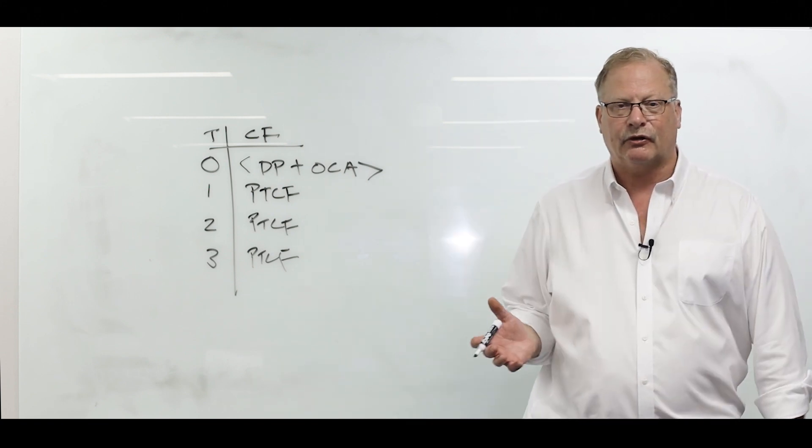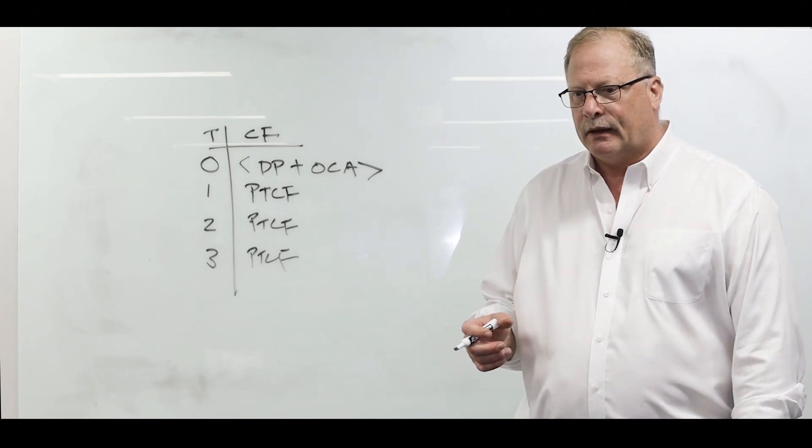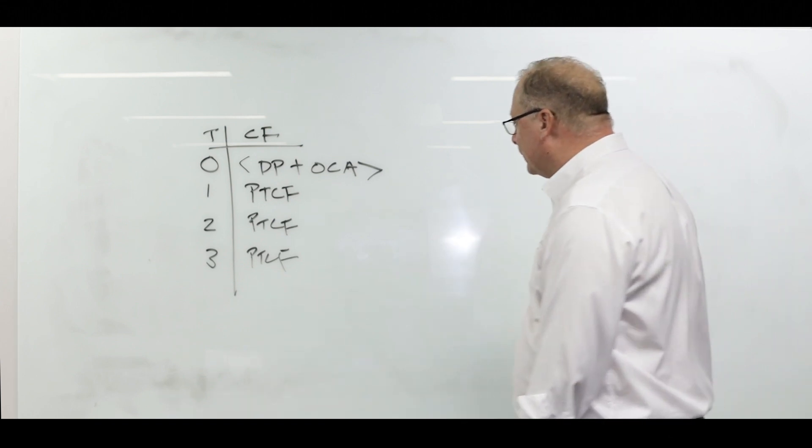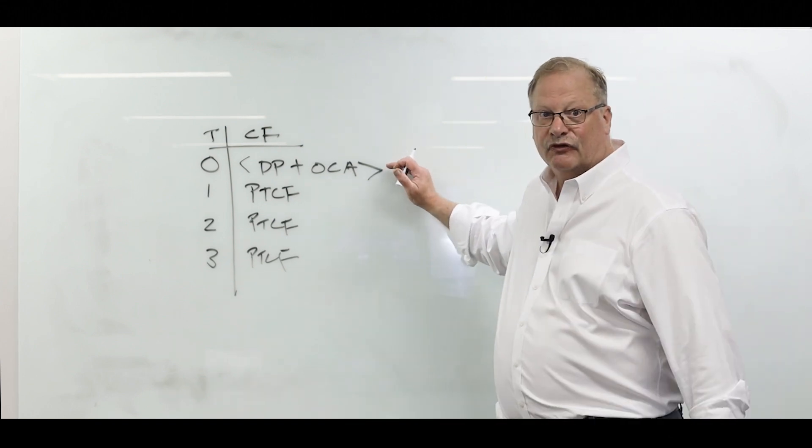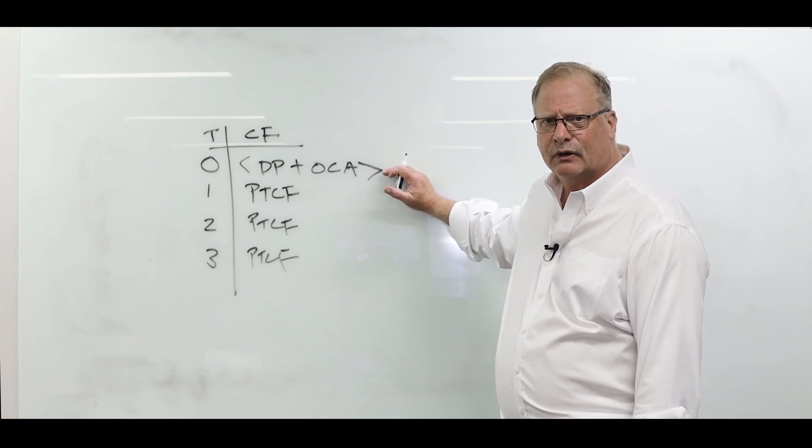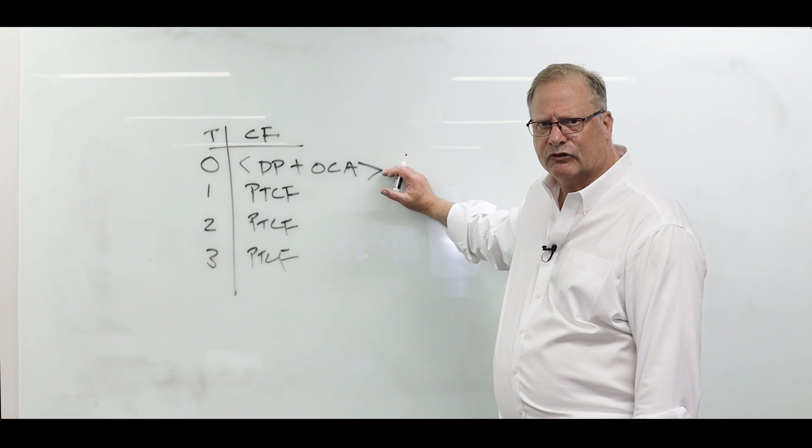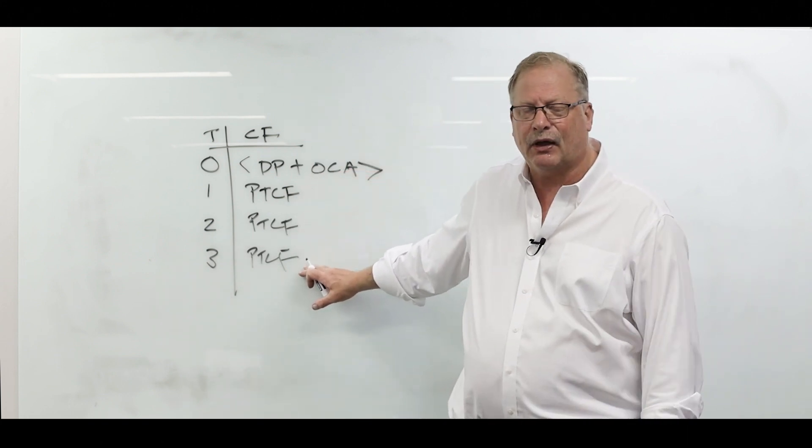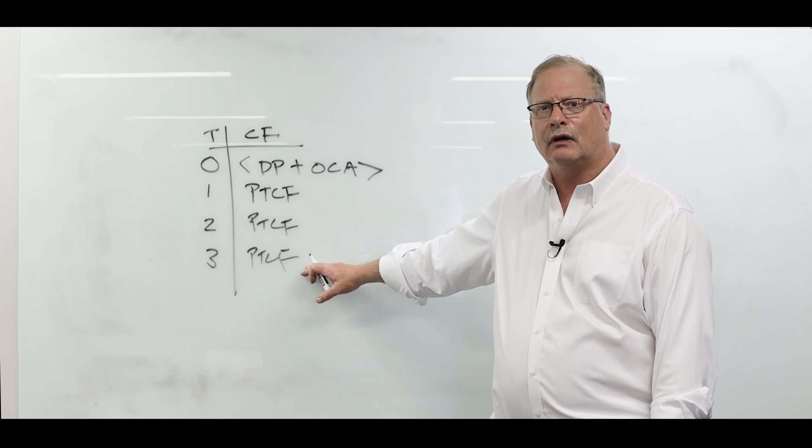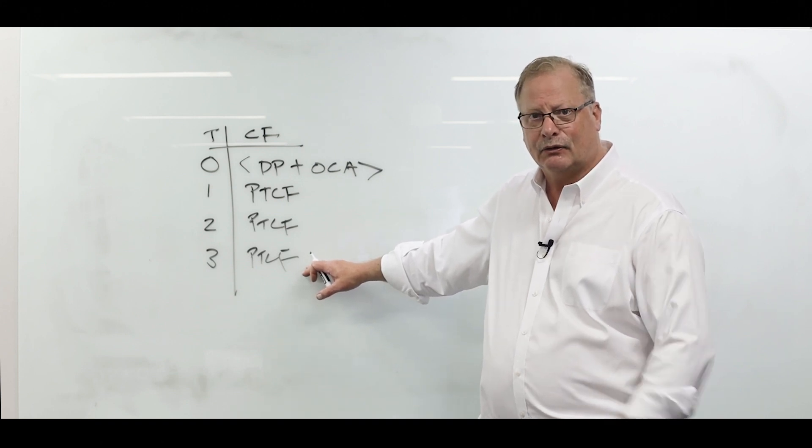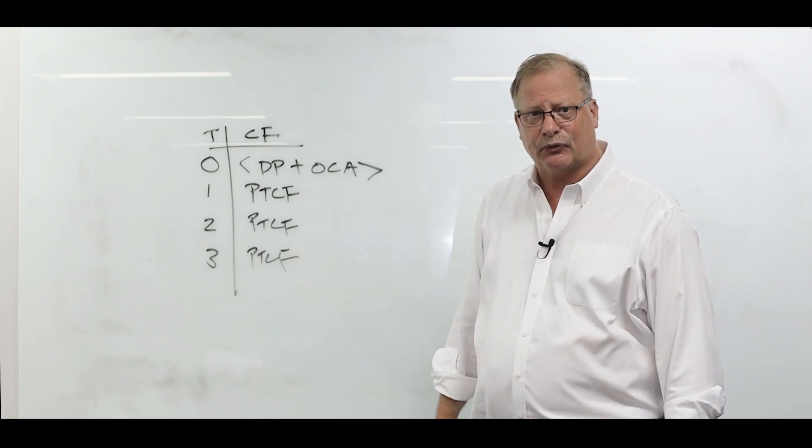To give context, let me use Sarah's fourplex. At time period zero, they put down like 75 grand or something like that, the down payment, the other cost of acquisition. Over the first three years, when they do their APODs on the subject property each year at the end of the APOD, what did they get? They got pre-tax cash flow.